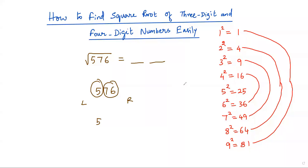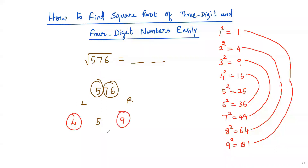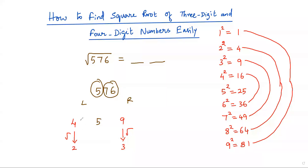Looking at 5 among the squares of the nine digits, 5 is not a perfect square, but it lies between the two perfect squares 4 and 9. The perfect square less than 5 is 4. The square root of 4 is 2 and the square root of 9 is 3. Since 4 is the perfect square less than 5, we take √4 = 2 as the first digit.